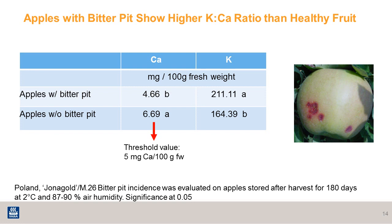There are other nutrients that can impact fruit quality — for example, potassium. Too much potassium can be a bad thing. Here you have apples with bitter pit. A lower calcium concentration, typically below 5 mg per 100 g fresh weight, combined with a higher concentration of potassium, can cause a high potassium-to-calcium ratio, resulting in bitter pit problems. Conversely, if you have high calcium and low potassium, the ratio would be lower, and you will tend to have better quality apples.